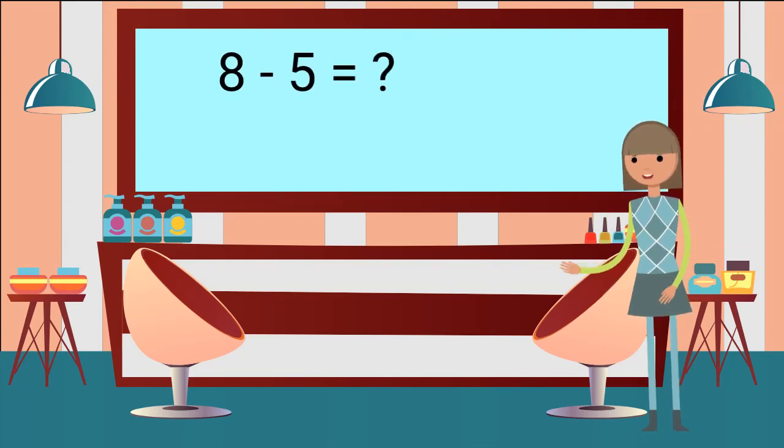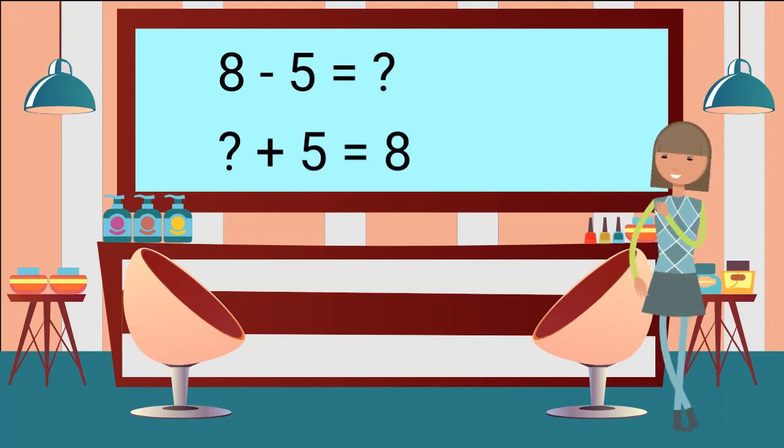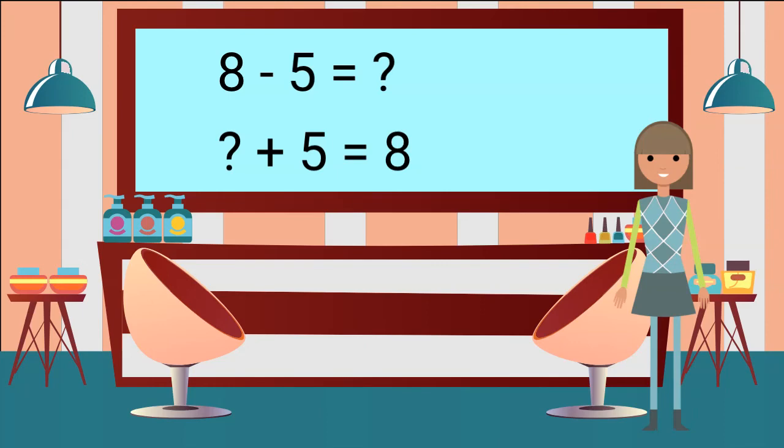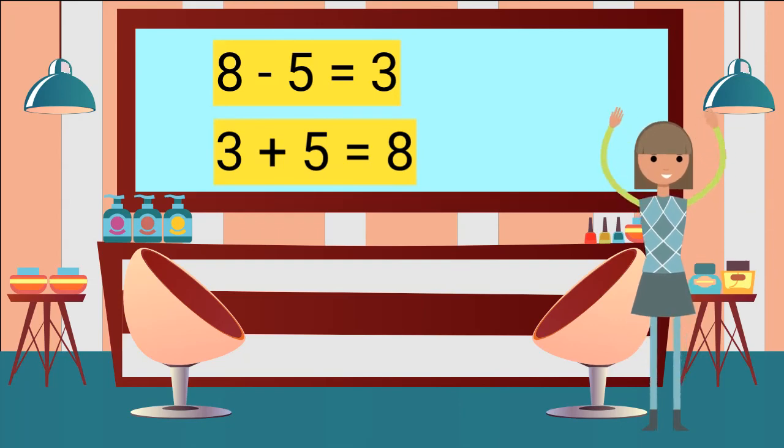One more. To find 8 minus 5, think to yourself, how many more can be added to 5 to make 8? What is your answer? Yes! 8 minus 5 is 3 because 3 plus 5 equals 8.